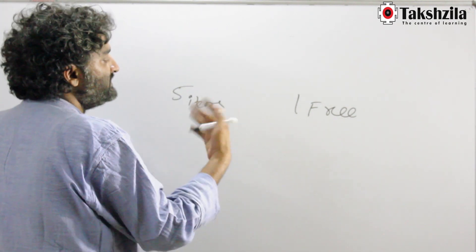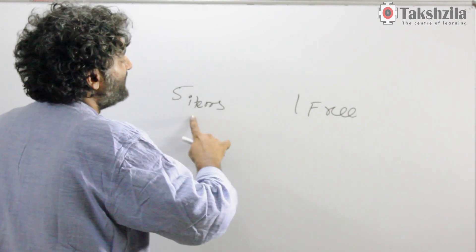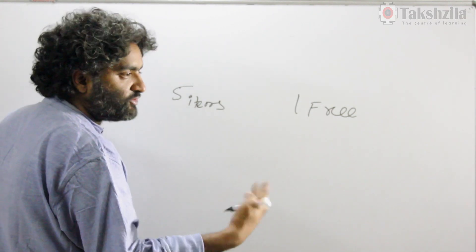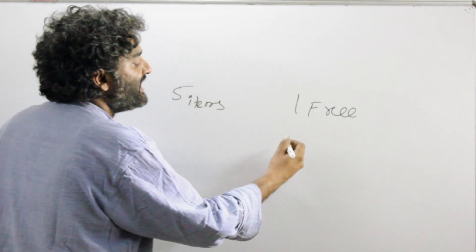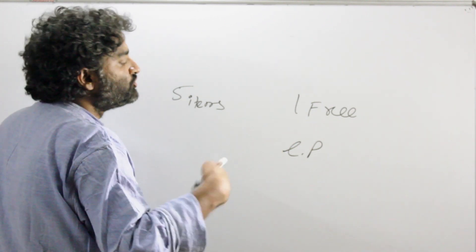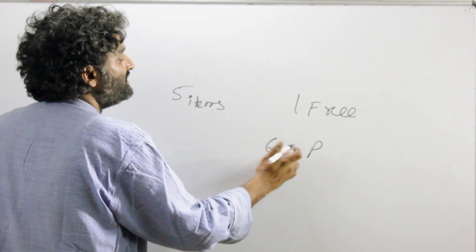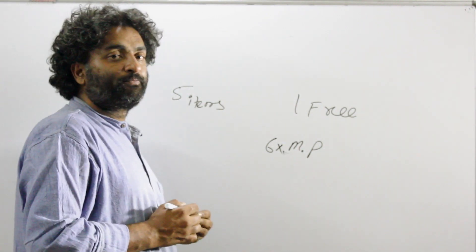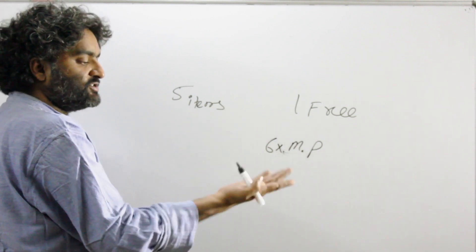Think in terms of the list price. How many items did you get? Five and one — you got six items. If you look at the tag price just before wearing the shirt and throwing the tag away, the tag price is the list price, the mark price. So how much should you have paid? You should have paid six times the mark price. But what you did pay was five mark price, because you paid for only five items.